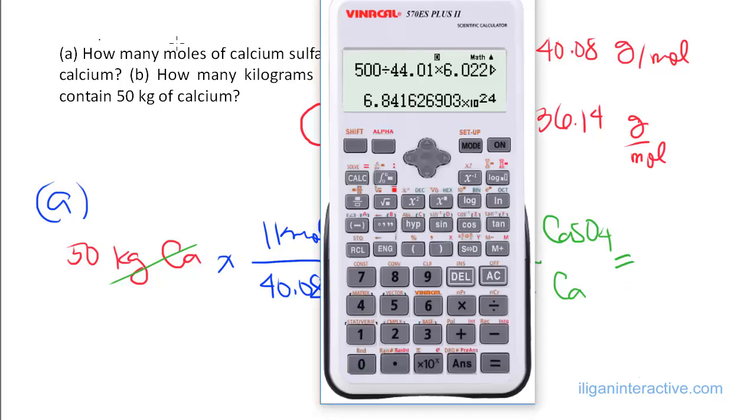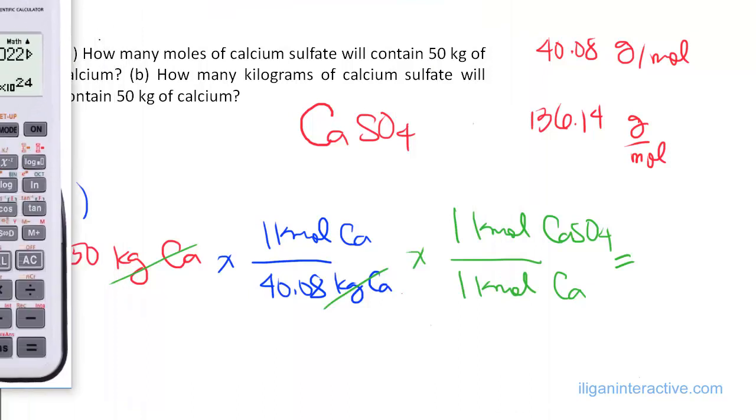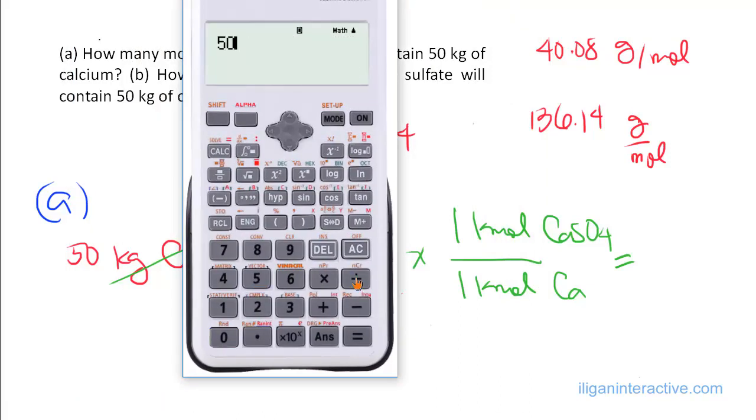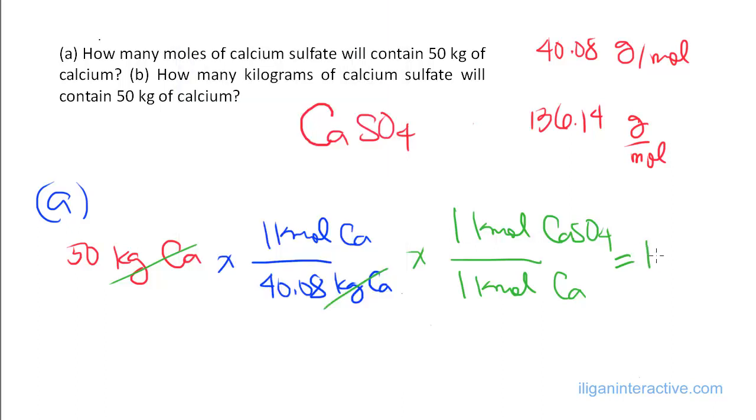For this, we are being asked for moles, but of course, we can just say that its answer will be in kilomoles, so 50 divided by 40.08 times 1, the answer is just 1.248 kilomoles of CaSO4. That's the answer for part A.